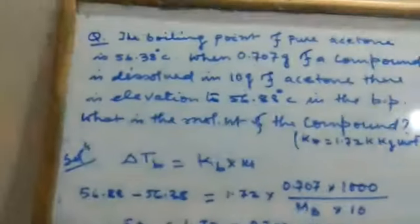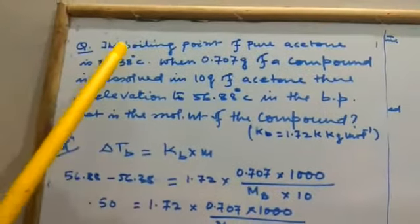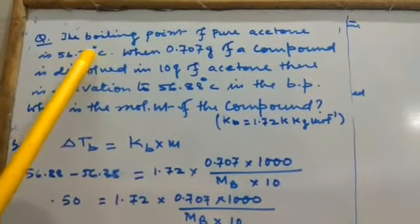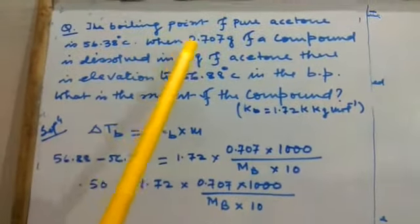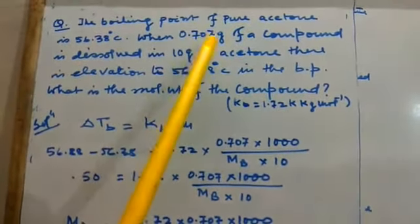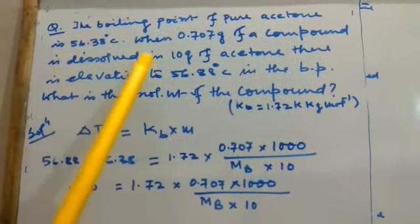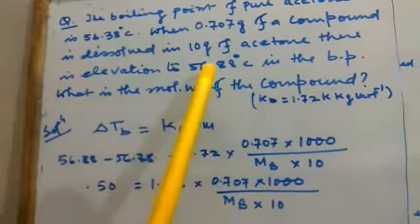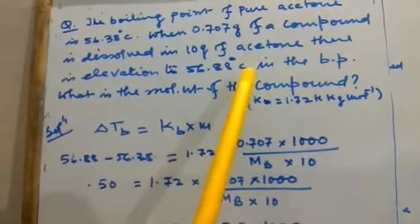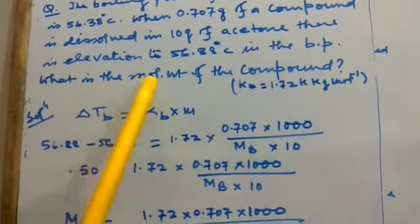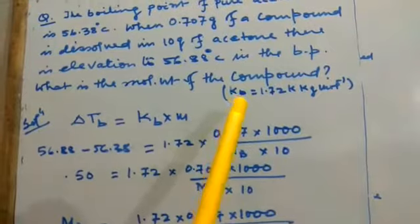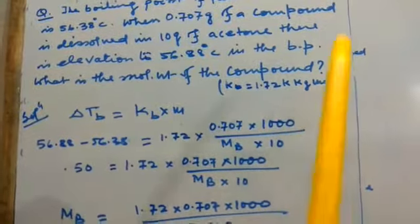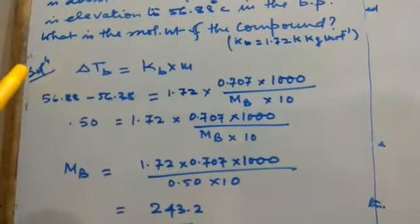Now, question: The boiling point of pure acetone is 56.38 degree centigrade. When 0.707 gram of compound is dissolved in 10 gram of acetone, there is elevation to 56.88 degree centigrade in the boiling point. What is the molecular weight of the compound? Kb is given is equal to 1.72 Kelvin kg per mole.